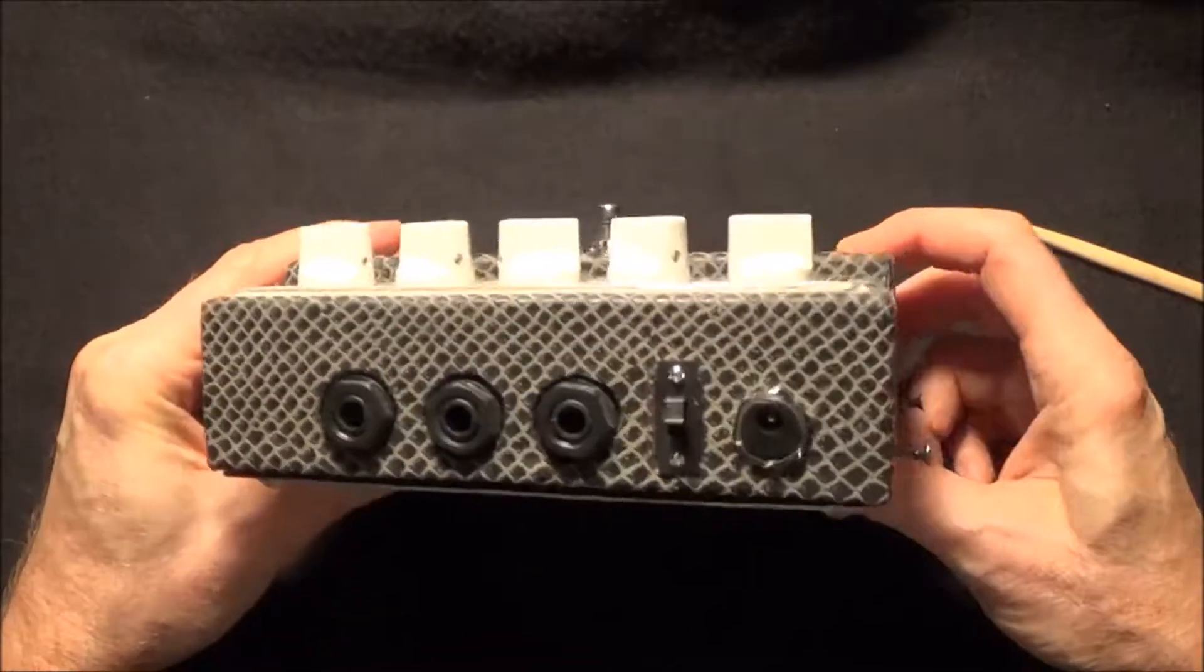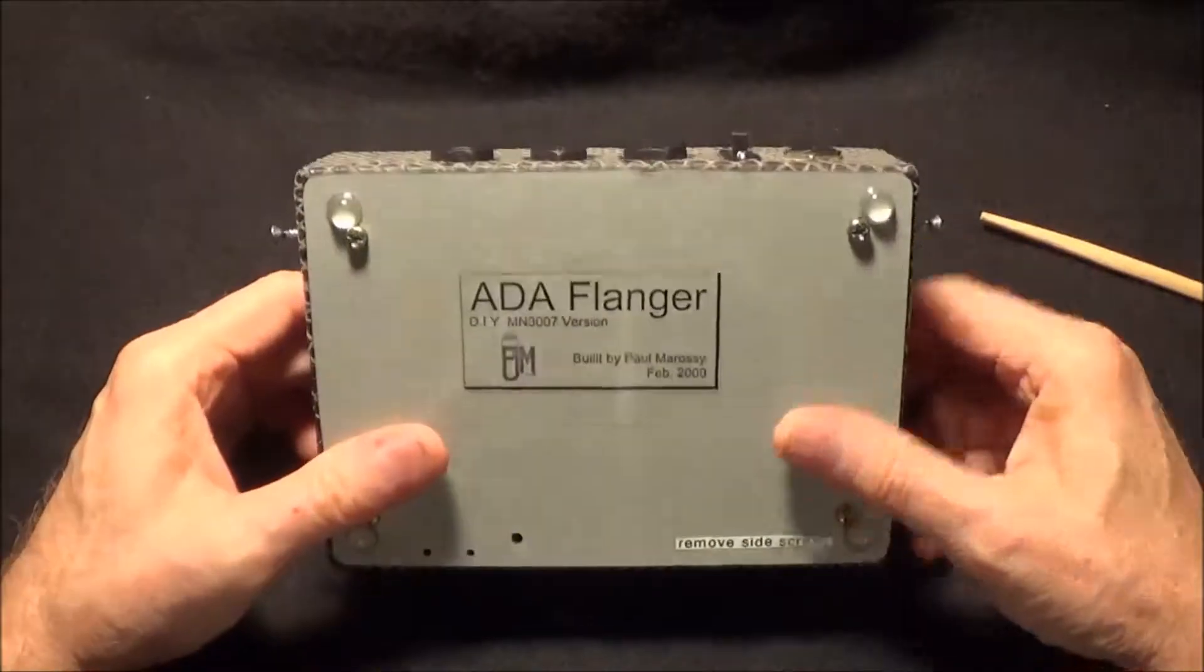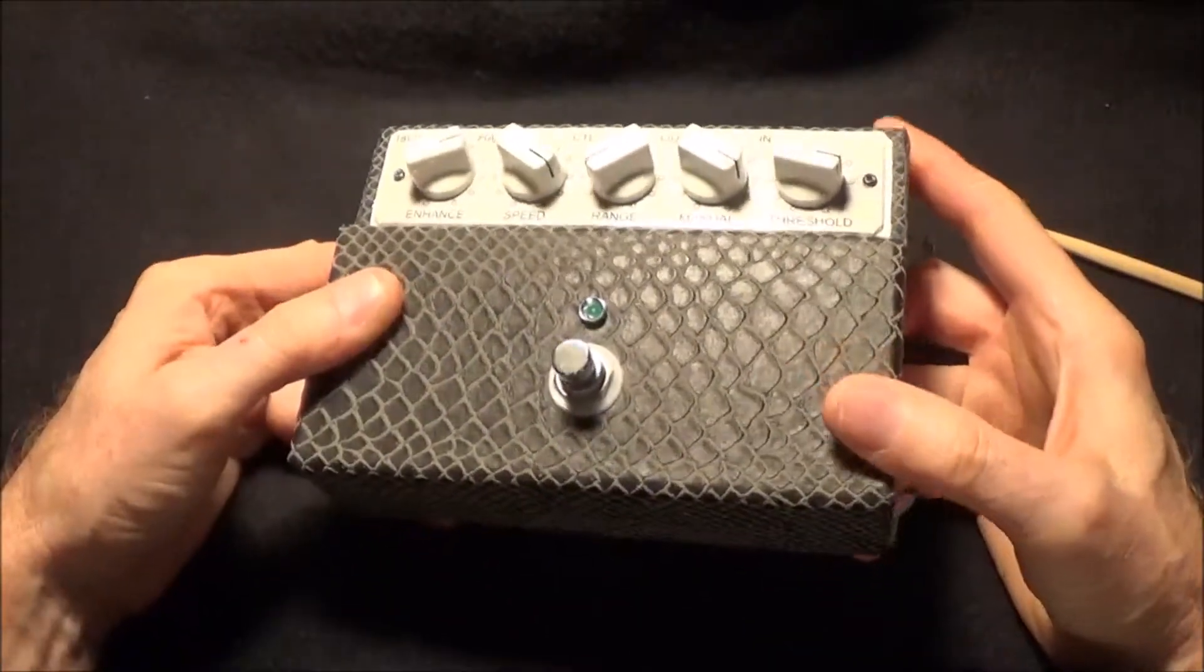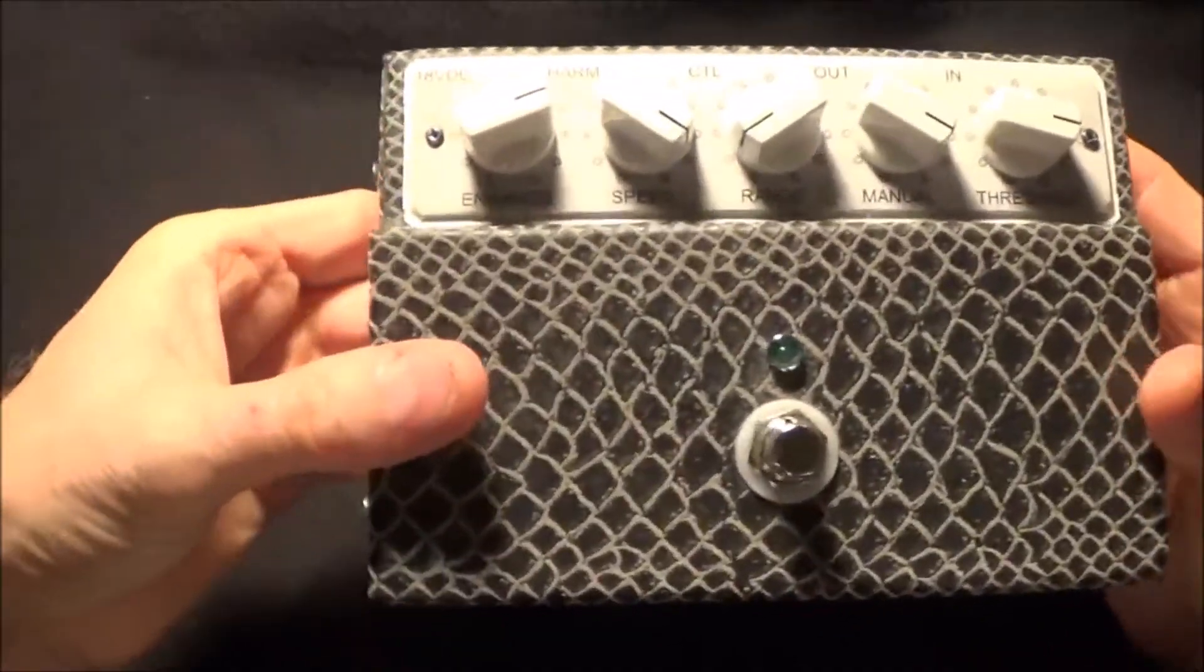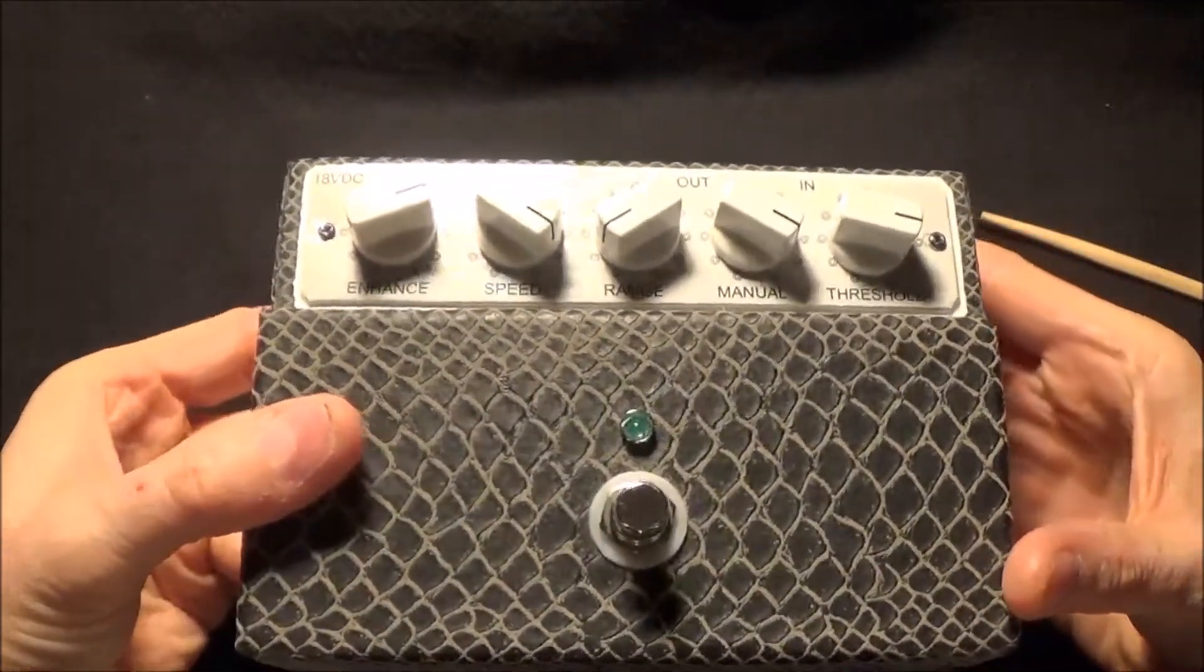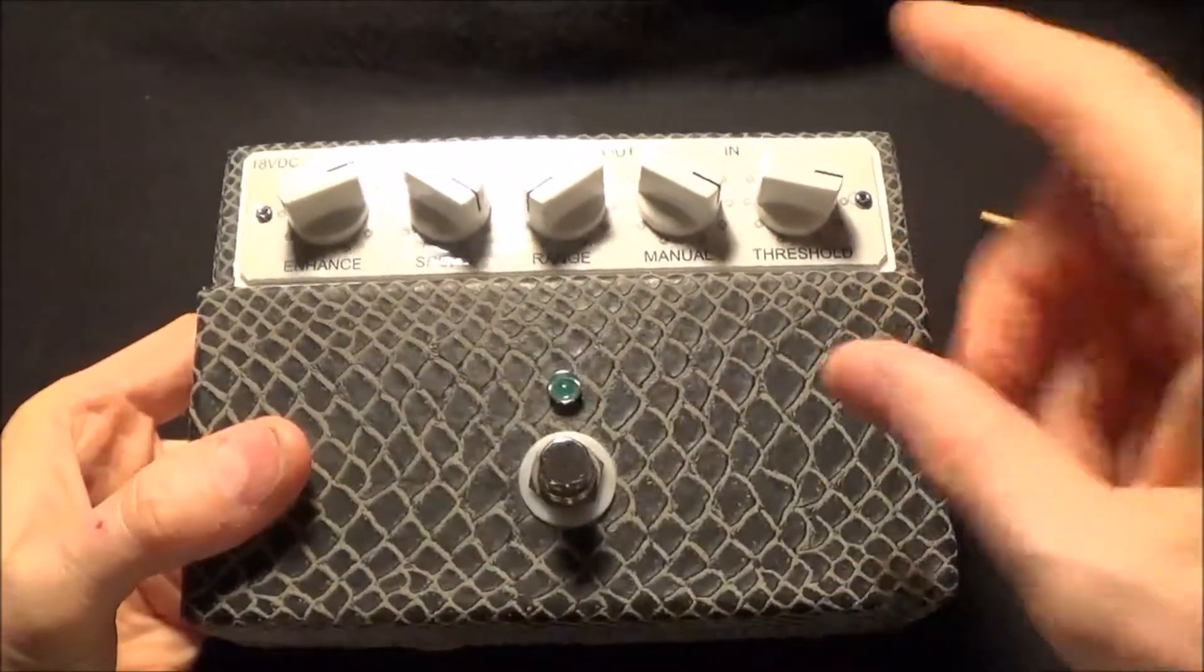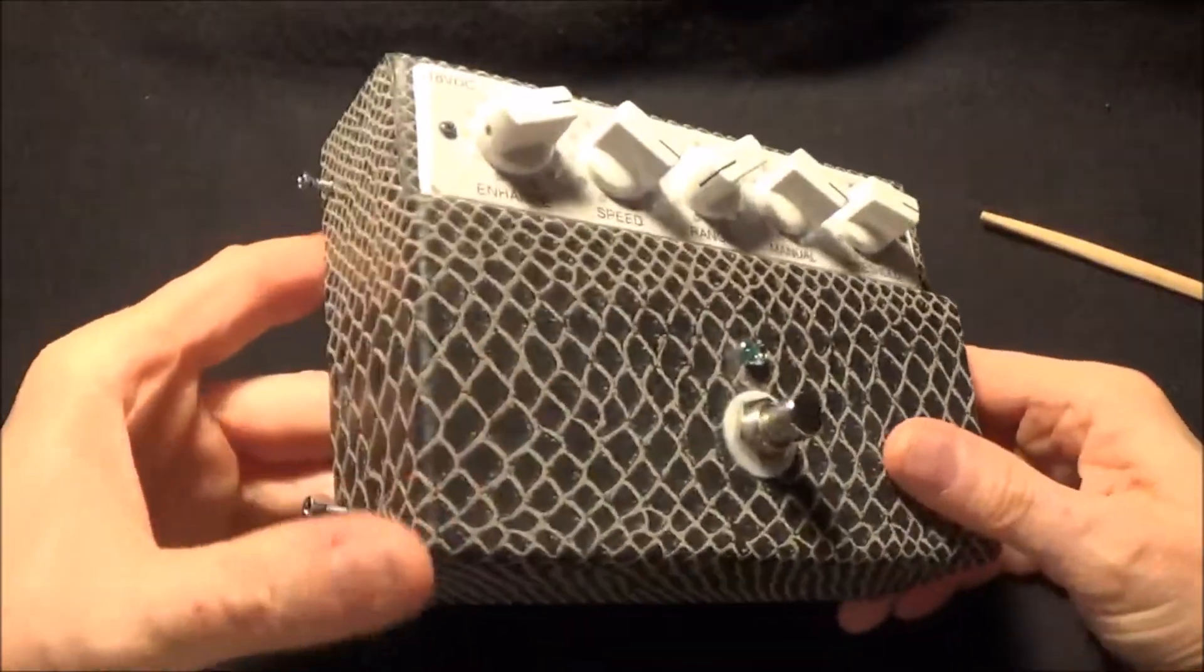So that's what I did. This has a covering, it's like this fake alligator skin stuff that I got at Joann's, the craft store. You might notice that the controls are backwards from the original ADAs. The in and the enhance is on the left side instead of on the right, so it's just mirrored. You'll see why in a minute.